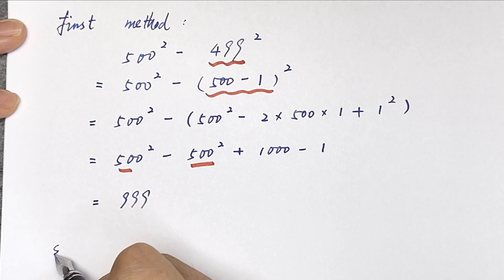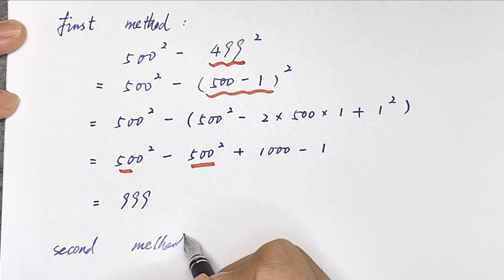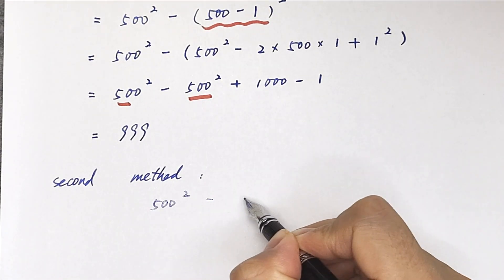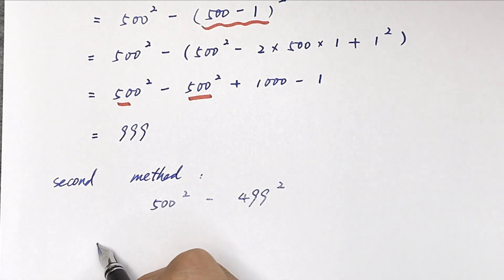Okay, the second method: 500 squared minus 499 squared is equal to, now we apply the formula for the difference of squares.